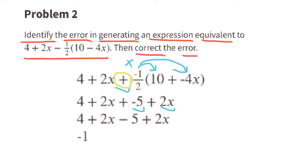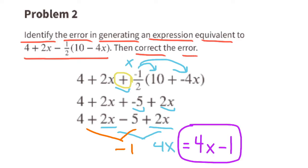They rewrote the expression as negative 1. Their error was that they subtracted 5 plus 2x from 4 plus 2x. That's a mistake because the 5 plus 2x are not in parentheses, so this is just minus 5. So 4 minus 5 is negative 1 and 2x plus 2x is 4x, which we can rewrite as 4x minus 1.